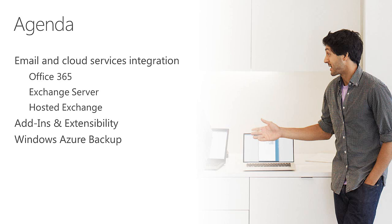The main area of integration that folks probably think of when they think about Essentials is email integration. There are a number of different choices for what email solution you'd like to use in an Essentials environment. This could be Office 365 for hosted email, an Exchange Server running on-premises, or a third-party hosted Exchange solution. We'll also look at add-ins and the extensibility model, and we'll talk about Windows Azure Backup as an example of another add-in.